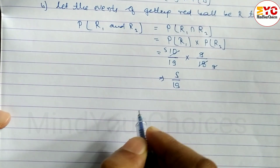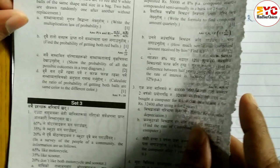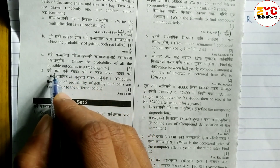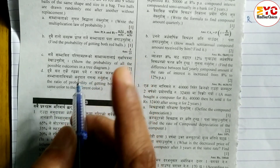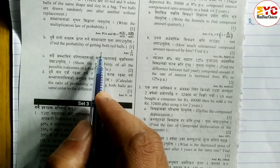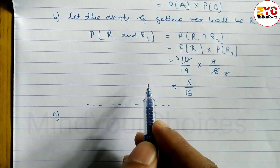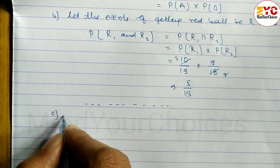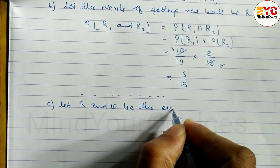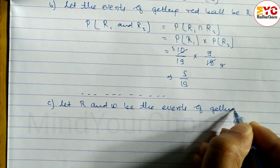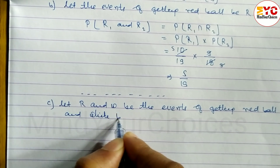The probability of getting both red balls is 5/19. Now look at question number C: show the probability of all outcomes in a tree diagram. There are 10 red balls and 9 white balls. Two balls are to be withdrawn. Let R and W be the events of getting a red ball and white ball respectively.